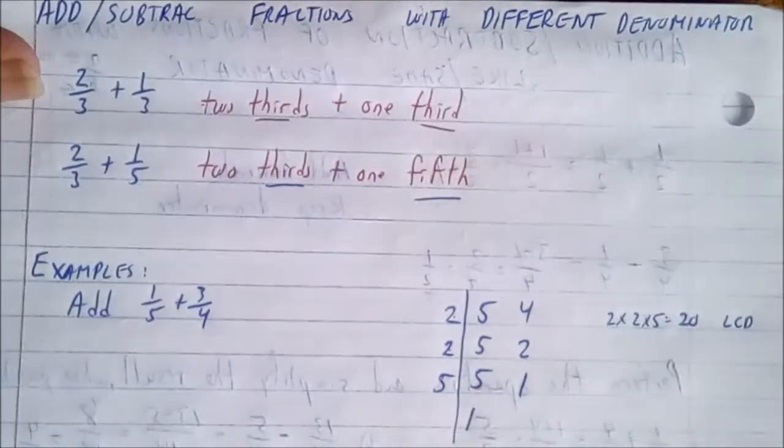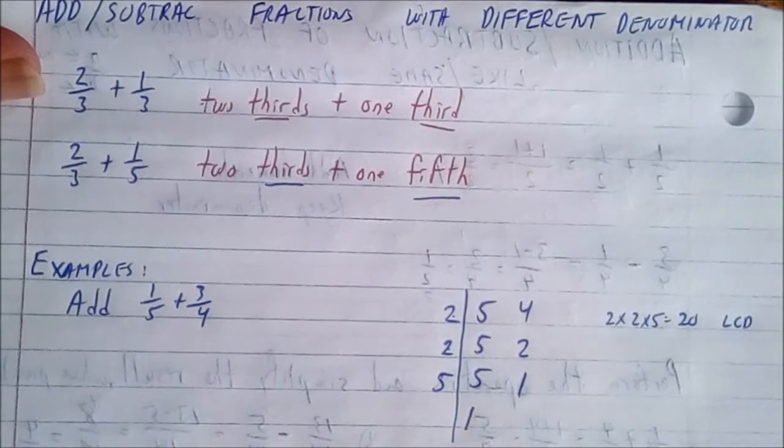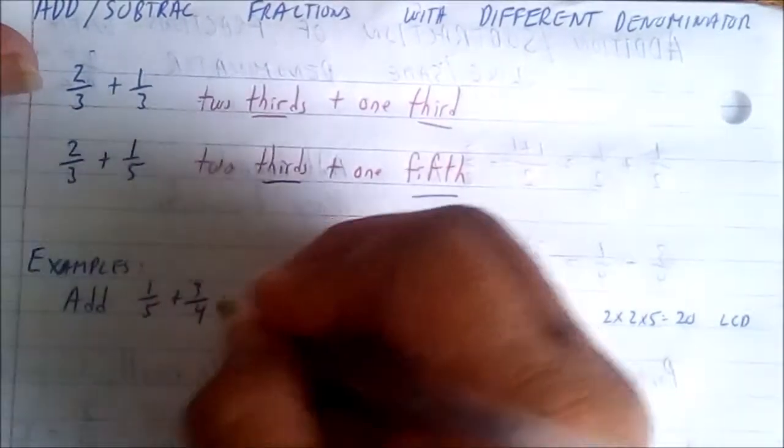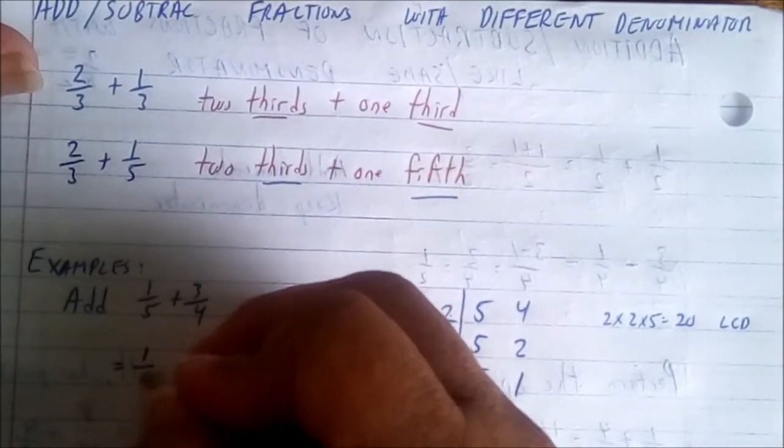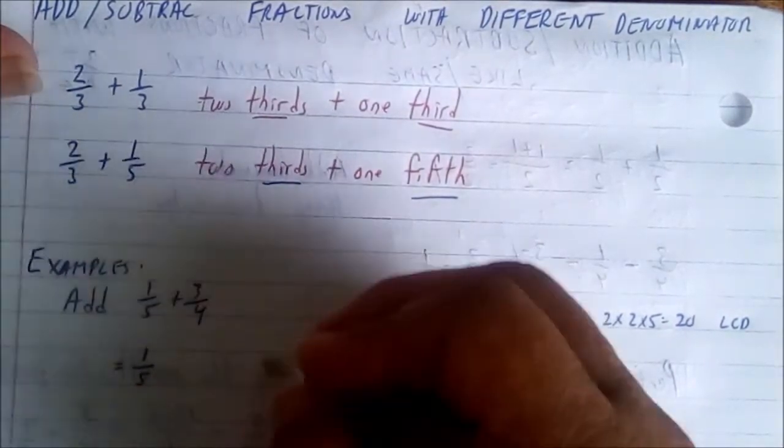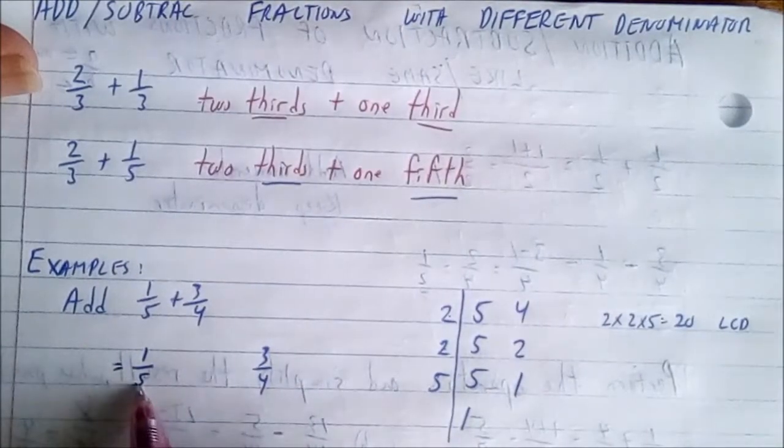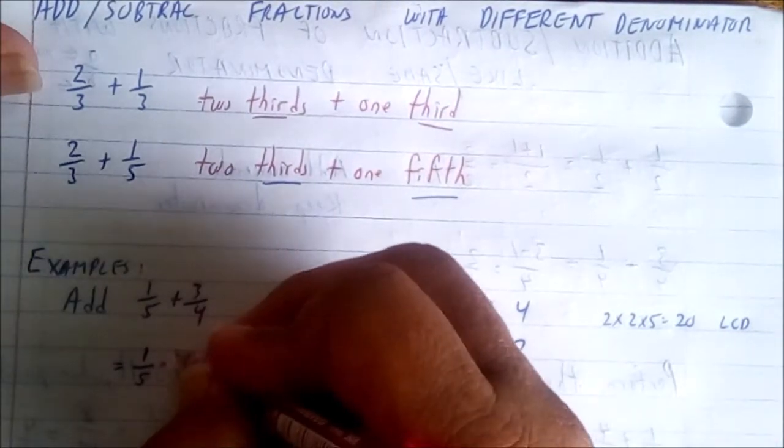Therefore we need to get both of them to have the same value as the denominator. Bring down the problem here: one fifth and three fourths. The only way I could multiply five to get 20 is to multiply by four, so whatever I multiply at the top I must multiply at the bottom.